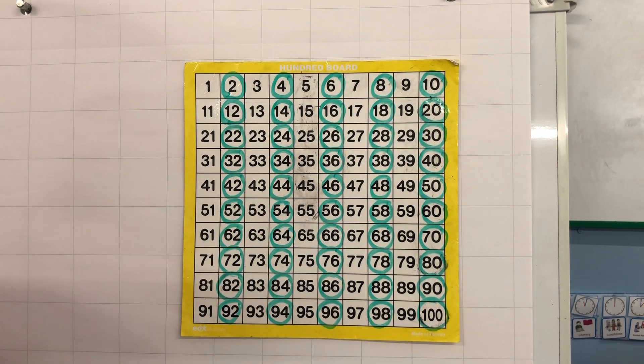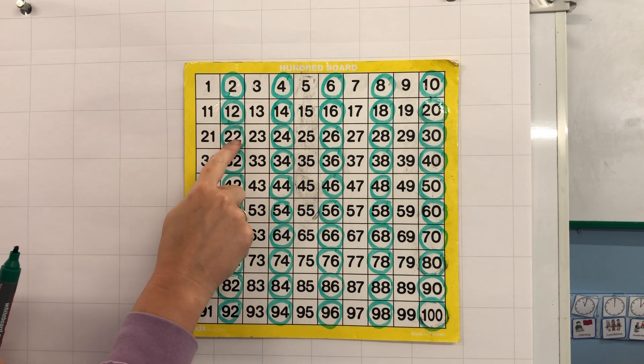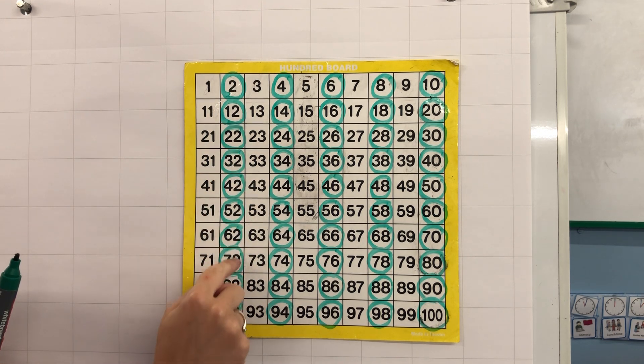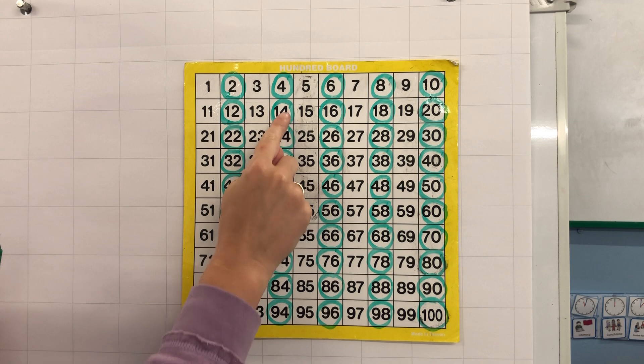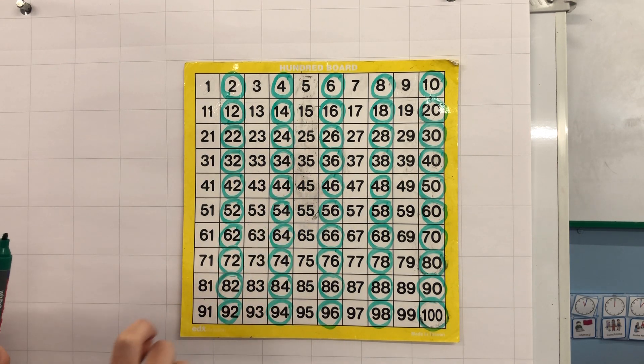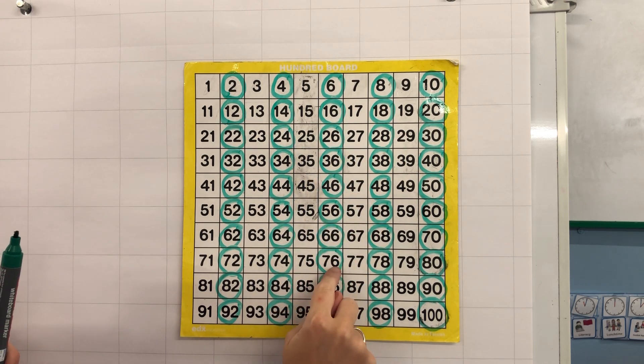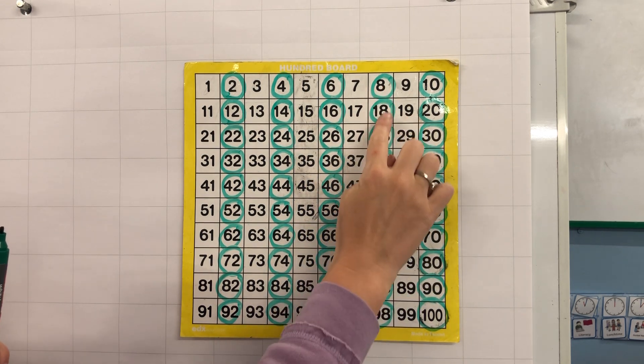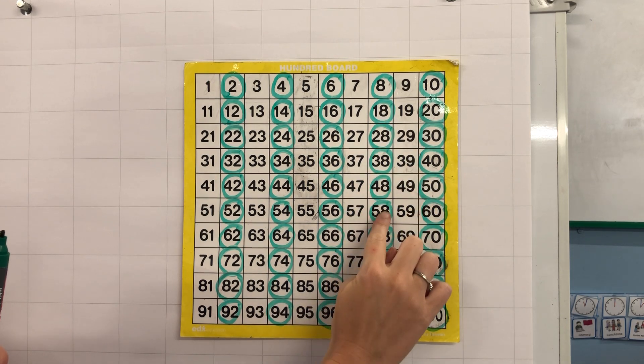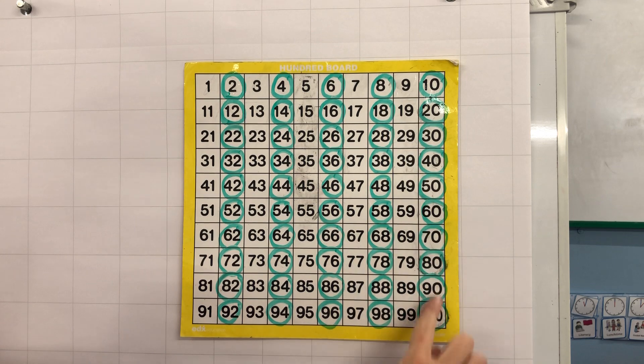Well done if you have noticed that multiples of 2 end in either a 2, either ending a 4, either ending a 6, either ending an 8, or end in a 0.